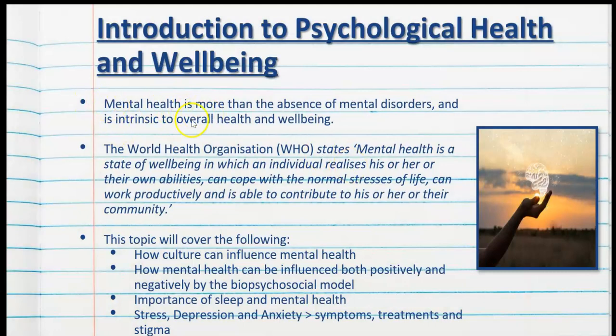Mental health is more than the absence of mental disorders and is intrinsic to overall health and well-being. As part of this topic we discuss mental disorders, in particular anxiety and depression, as well as other mental disorders like personality disorders and schizophrenia. But we don't just focus on mental disorders. Mental health is separate to that — someone may have poor mental health but it doesn't mean they have a diagnosable condition. Just because someone doesn't have a diagnosed DSM-5 mental disorder, it doesn't mean they don't have bad mental health. They are two separate concepts.